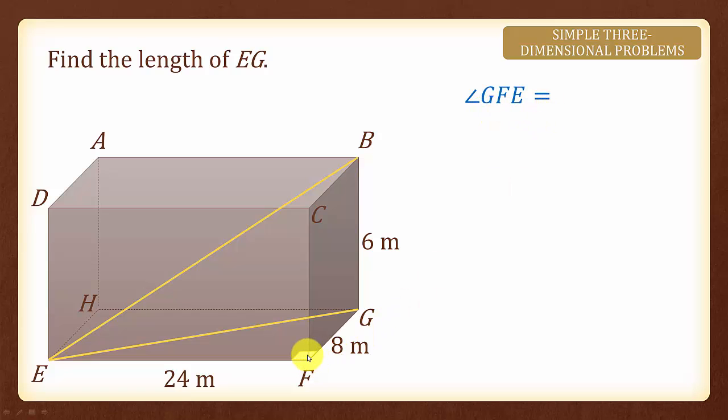And do you know what is the value of angle GFE? Yes, the angle GFE is 90 degrees because this is a rectangular surface of a cuboid. Since angle GFE equals to 90 degrees, we can use Pythagoras theorem to find EG.